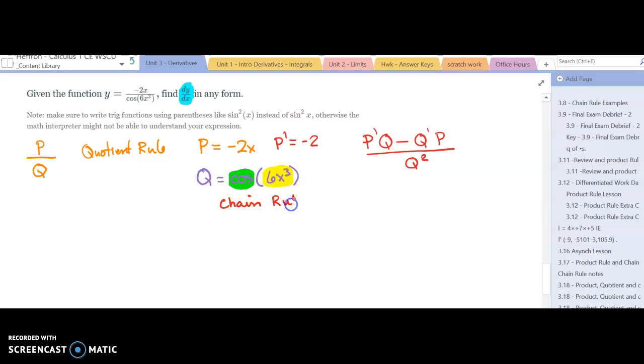The chain rule says the inner prime times the outer prime, so that means we need to decide what is the inner and the outer. Well, our inner is the inside function, 6x cubed. I prime will then be 3 times 6 is 18x to the power of 2.